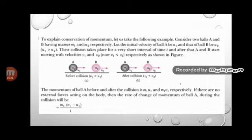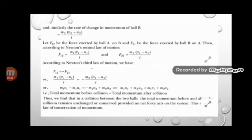Momentum is the product of mass × velocity. The initial momentum of A is M1×U1 and the final momentum of A is M1×V1. According to Newton's second law, the force acting on A is F1 = M1(V1 − U1)/T. Similarly, the force acting on B is F2 = M2(V2 − U2)/T.